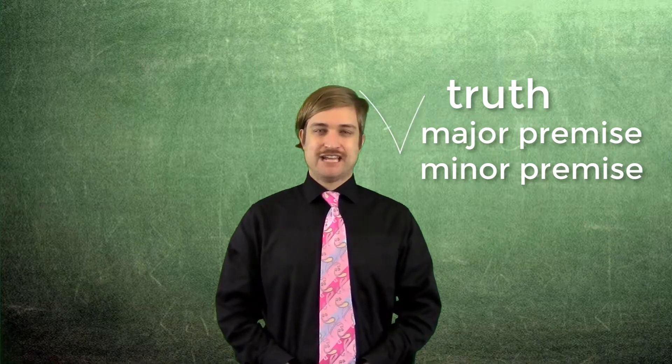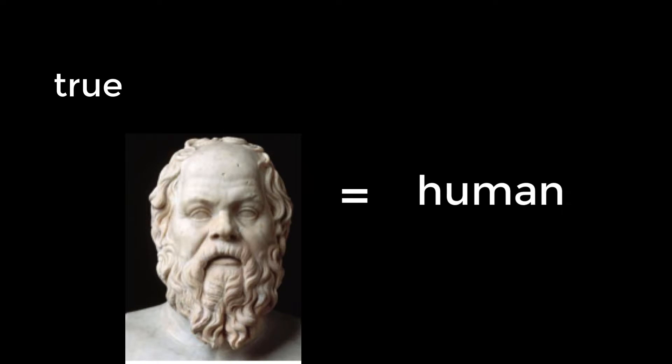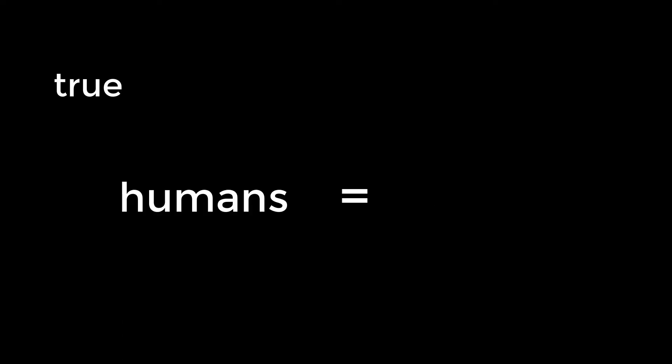Truth refers to whether the major and minor premise are factually accurate. Our prior example is true because Socrates is indeed a human and humans are indeed mortal.